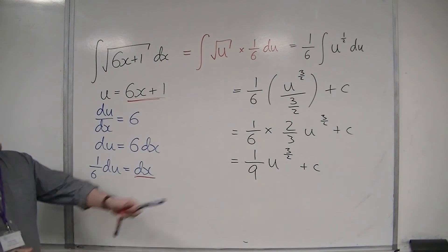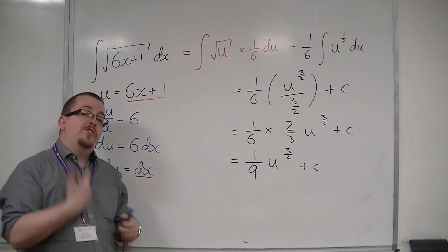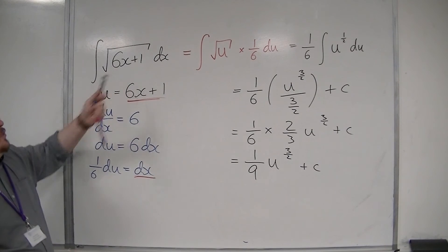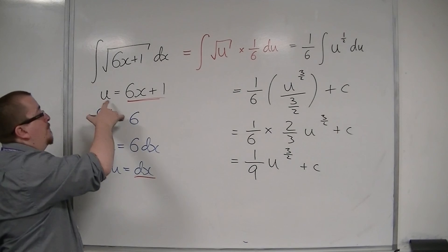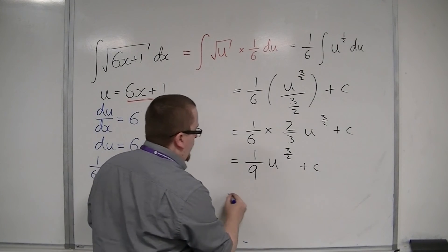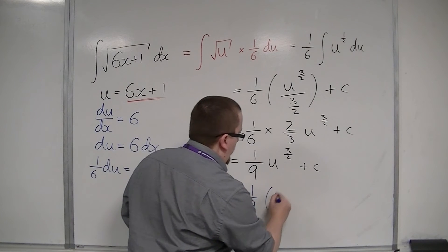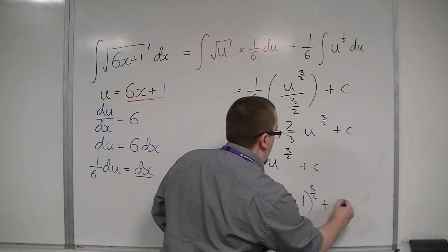So, you've got down to the integral of this, but we want to revert it back into our 6x plus 1. So, you substitute back in. u is 6x plus 1. And so, the final answer is 1 ninth, 6x plus 1 to the power of 3 halves plus c.